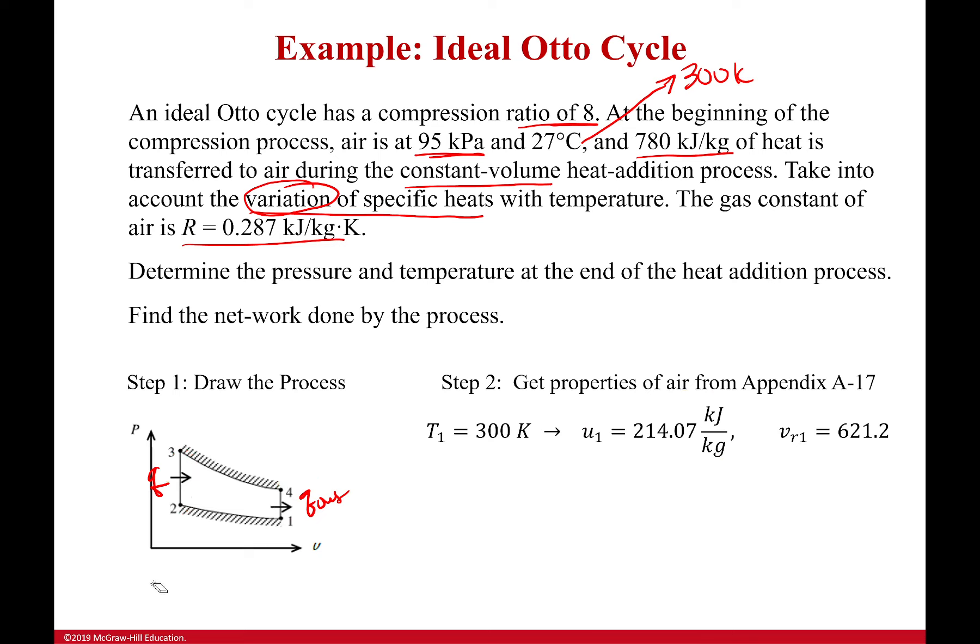Now, we have it at one and then it says it has a compression ratio of eight. So, that means that my volume one, my volume two, well, I know what that is. Volume two over volume one is equal to one eighth. So, I'm going to go ahead and figure out what my relative volume at state two is. I'm going to use that to go back to my tables and find my internal energy at two.